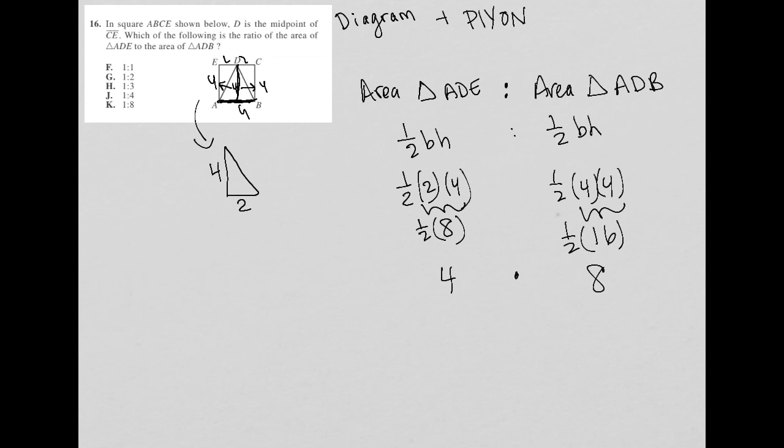So here is my ratio, 4 to 8. So in order to reduce this ratio, I'm going to divide by the greatest common factor, which in this case is 4, so divide by 4. So 4 divided by 4 is 1. 8 divided by 4 is 2. So my simplified or reduced ratio is 1 to 2, making the correct answer choice G.